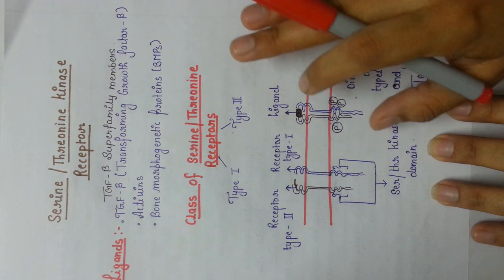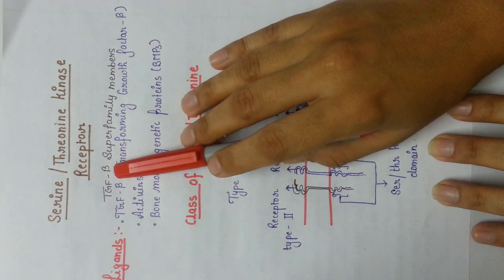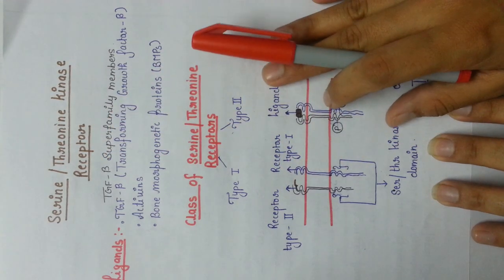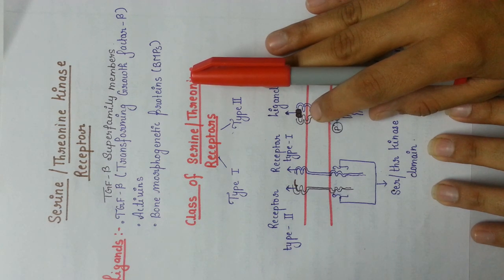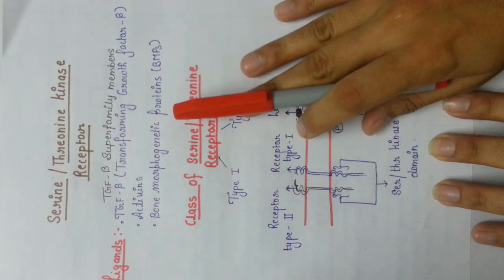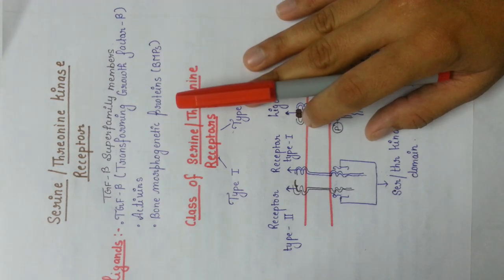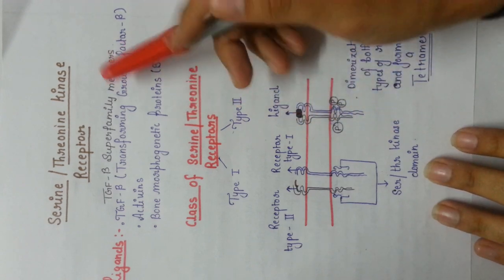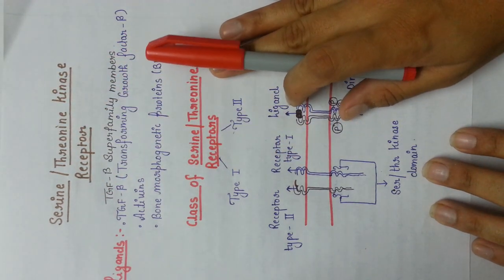We have already discussed the receptor tyrosine kinases and tyrosine kinase associated receptors in my previous videos. The last topic of this discussion would be your serine-threonine kinase receptor. It is also a kind of enzyme-linked receptor, but throughout we were reading that the kinases present in enzyme-linked receptors are tyrosine kinases. But now we are going to see that there are two other kinds of kinases present in your receptor — they are already linked to your receptor, they will get phosphorylated, and after that your signal transduction will be carried out. The receptor already contains serine-threonine kinases instead of tyrosine kinases.